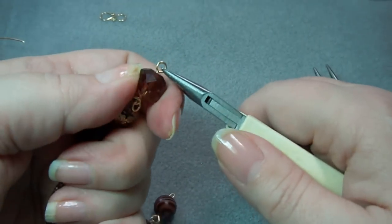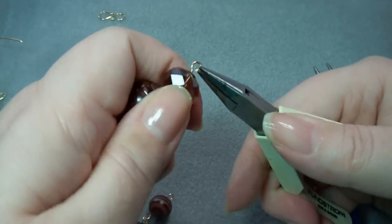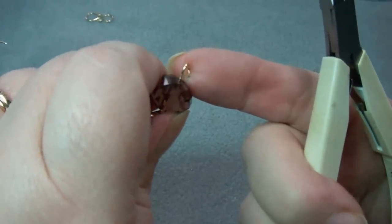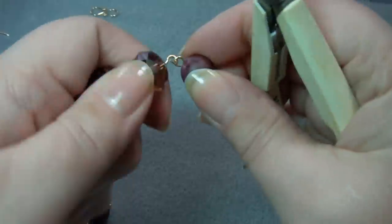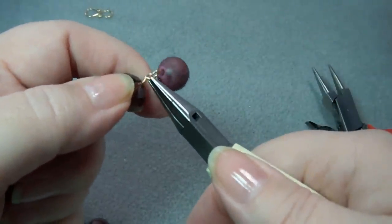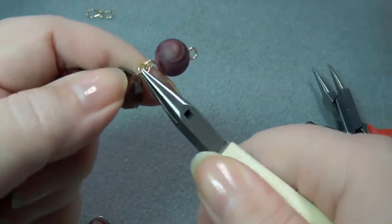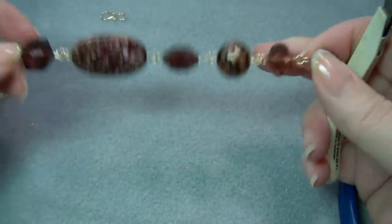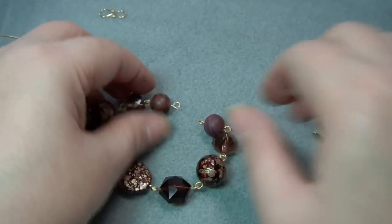Open the loop. You can see it's open a little bit. It's not too terribly bad. Thread on the other bead. Close the loop. And there you go. You just do that for all the beads in your bracelet.